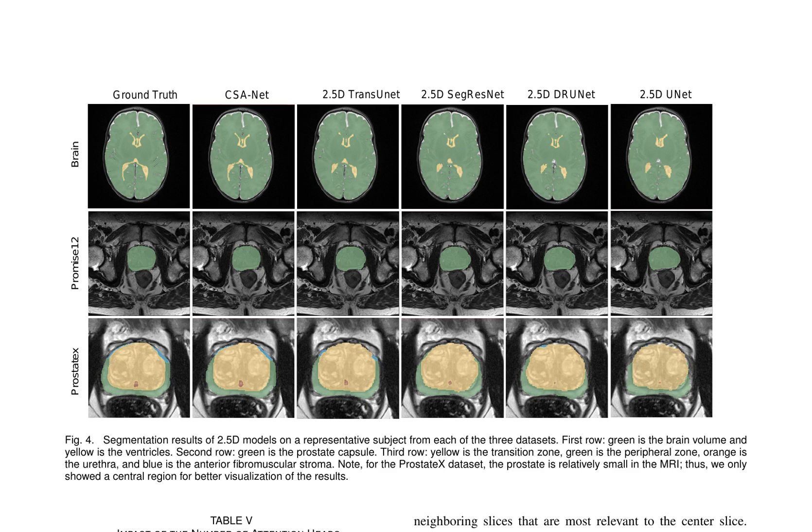The table presents the Dice coefficients and Hausdorff distances for the segmentation of different prostate regions using various 2D and 2.5D methods, demonstrating the proficiency of CSA-NET in segmenting complex structures. The qualitative evaluation illustrates the segmentation results of 2.5D models on three representative subjects from different datasets, showcasing CSA-NET's capability in addressing both binary and multi-class segmentation challenges.